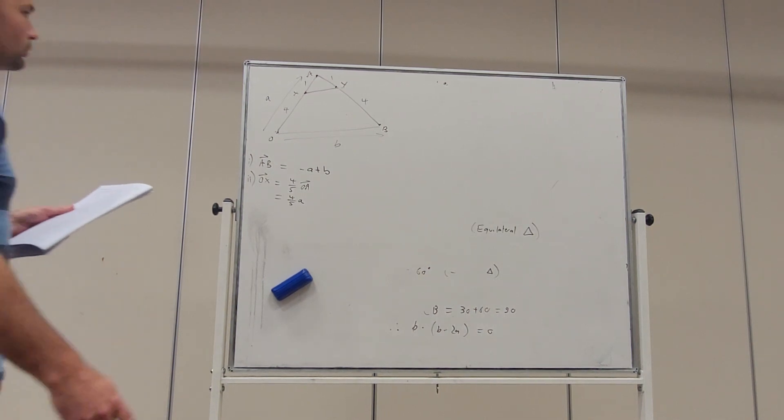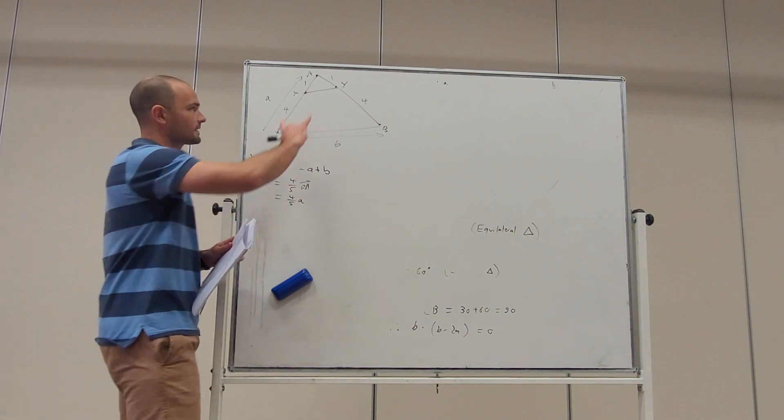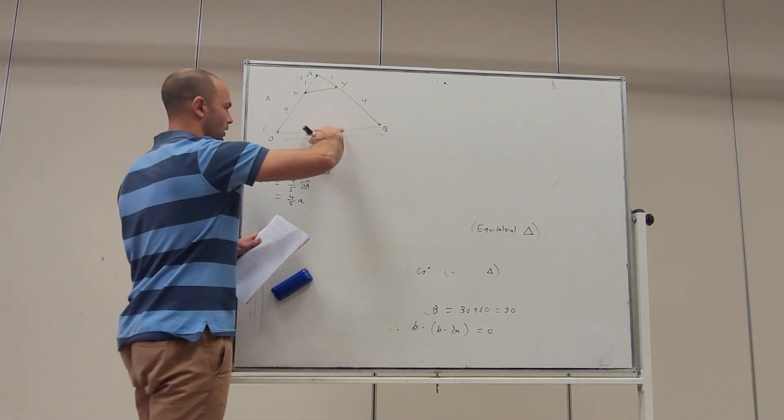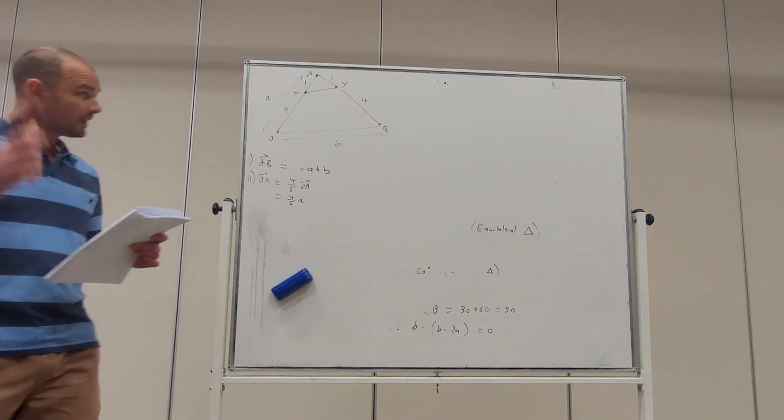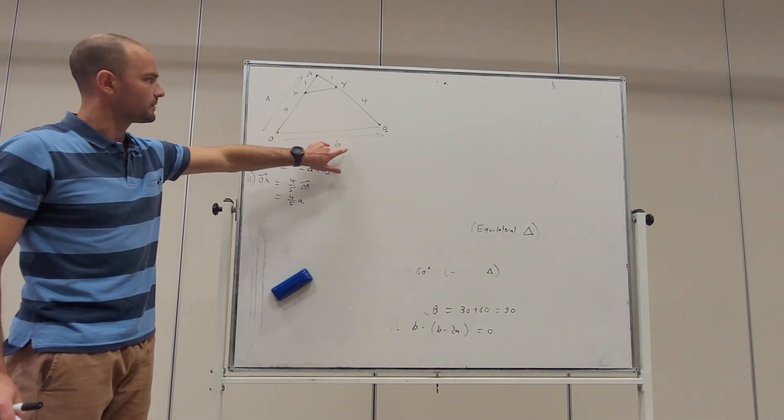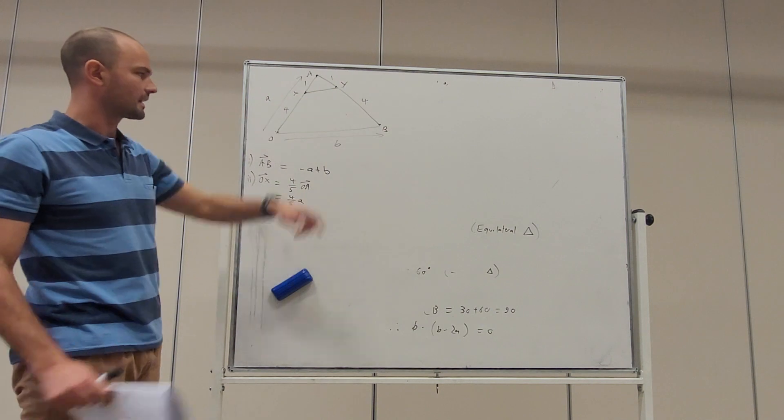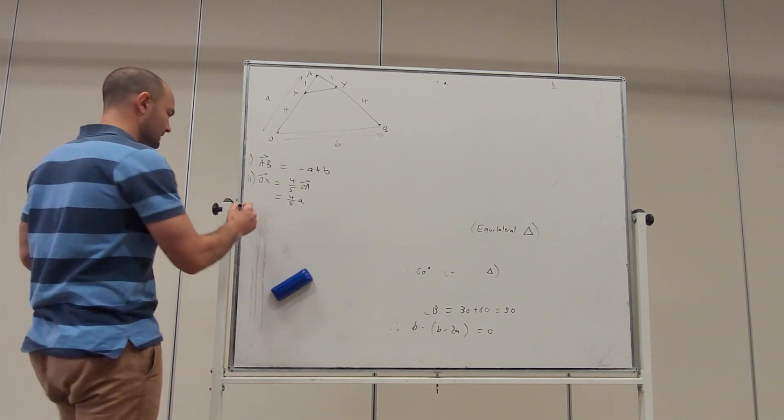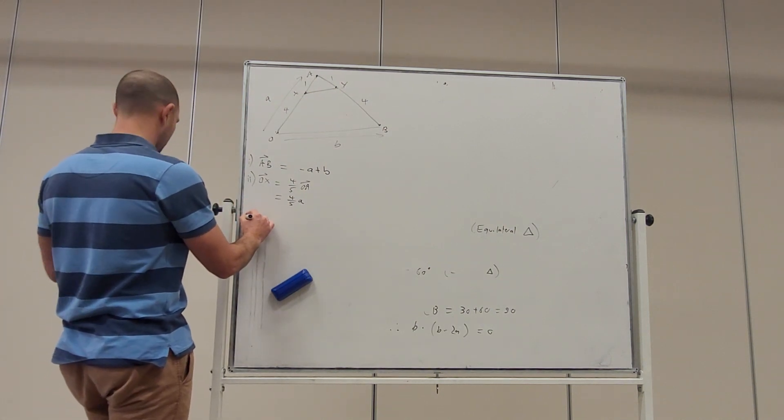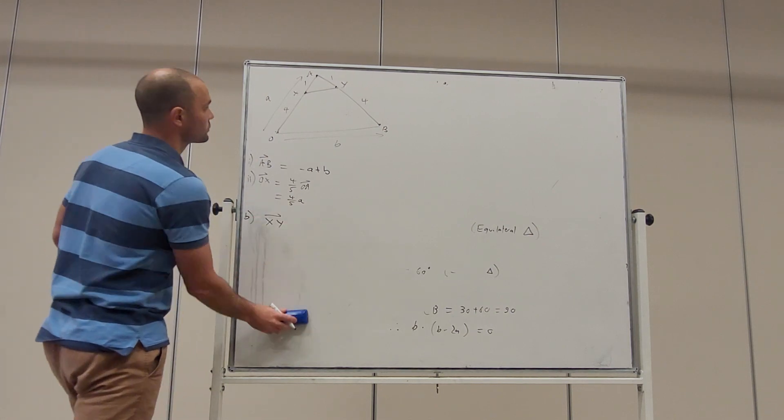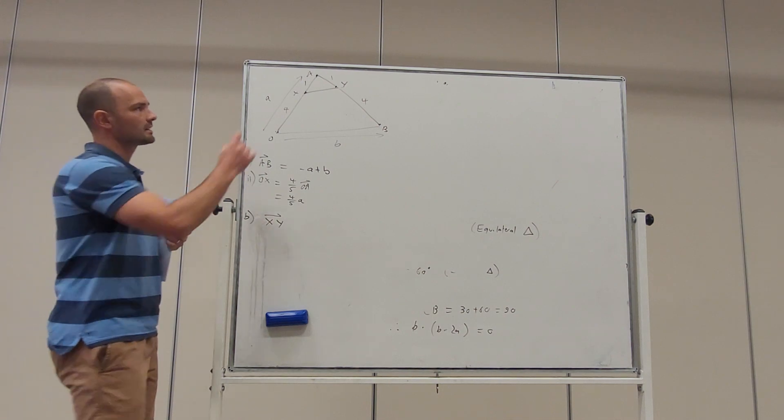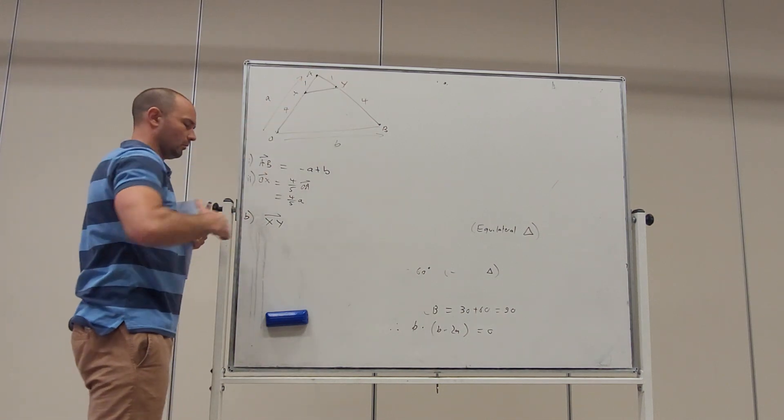All right. In terms of vectors A and B. Okay. Use a vector proof to show that XY is parallel to OB. So, we already have OB in terms of A and B. So, we need to find XY. We want to find what is vector XY. So, this is part B. So, we're interpreting the vector from X to Y. So, I'm going to say it's vector XA plus AY.